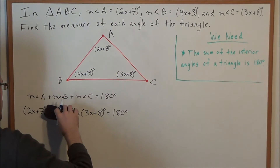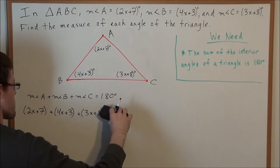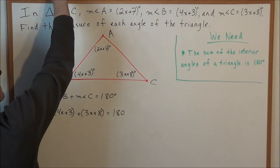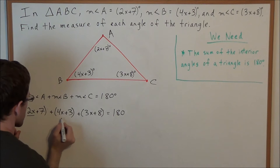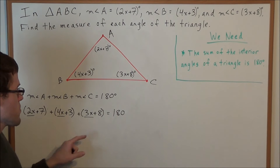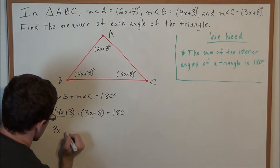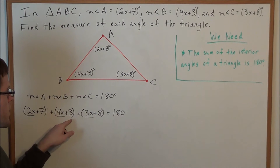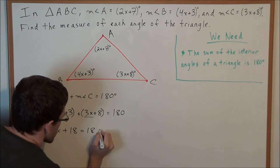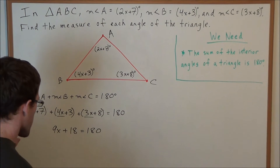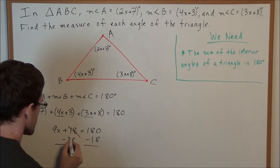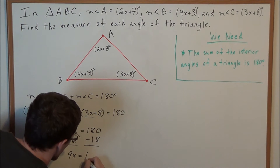We can cancel out the degree symbol on each term — it's like dividing both sides by degrees. So now we have 2x, 4x, and 3x. Well, 2x plus 4x is 6x, and 6x plus 3x is 9x. Then 7 plus 3 is 10, and 10 plus 8 is 18. So we have 9x plus 18 equals 180. To solve for x, we subtract 18 from both sides, which gives us 9x equals 162.